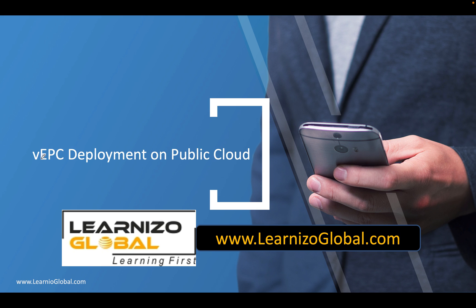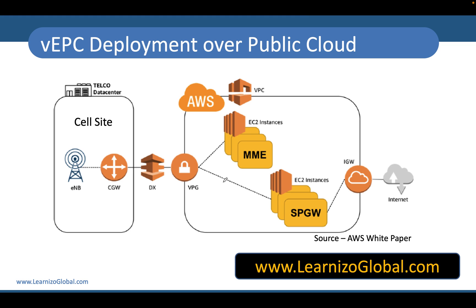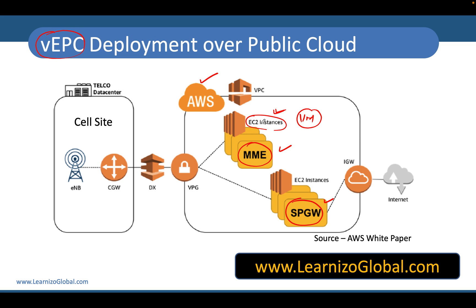However, we can also deploy our virtual EPC on a public cloud like AWS. In this scenario, EC2 instances — which are essentially virtual machines on AWS public infrastructure — can be used for hosting your network functions like MME or SP Gateway. So what we are doing here is using AWS infrastructure to deploy our virtual EPC, where the core network runs on a public cloud infrastructure.